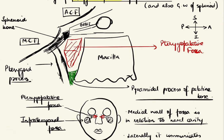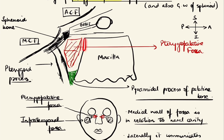Let us orient ourselves first — this being the superior part, inferior part, anterior part and the posterior part. This inverted pyramidal shaped fossa is bounded anteriorly by the superomedial part of maxilla, that is placed against the medial and superior part of the back of maxilla, and superiorly by the apex of the orbit and some part of the body of sphenoid, and posteriorly by the pterygoid process and some part of the greater wing of sphenoid.